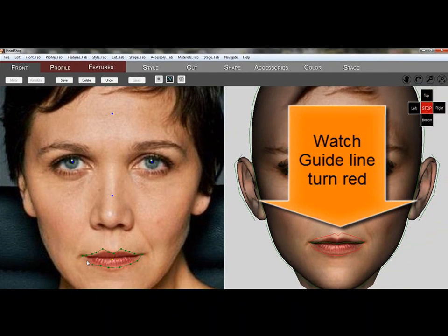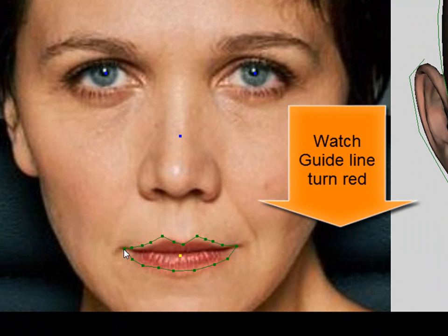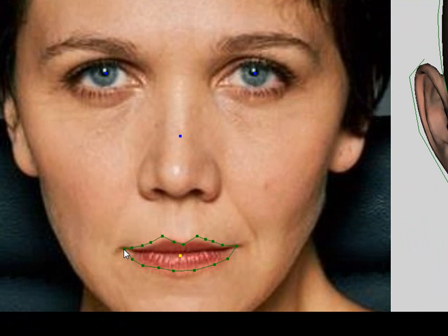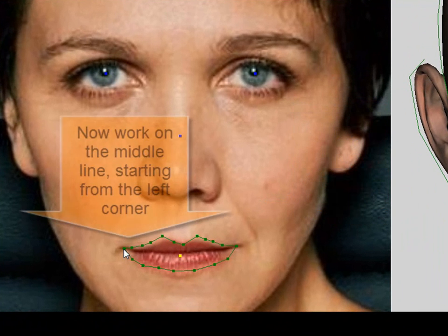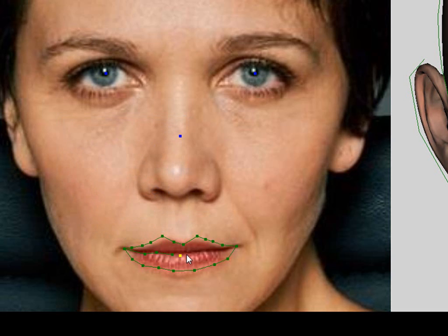Once we return to the starting point and thus finish the outline of the mouth, note that on the guide the middle line turns red, indicating that this is our next task. Starting on the left, we trace the middle line to the left. Once finished, we can unclick the Line tool and watch the mouth change shape.